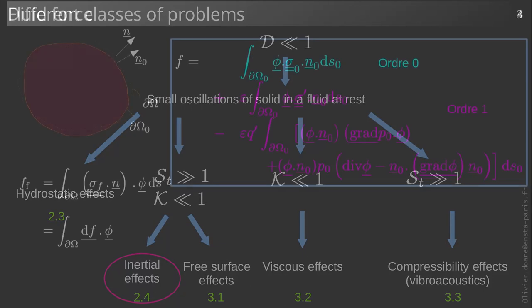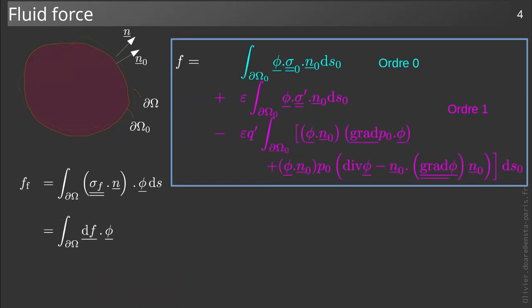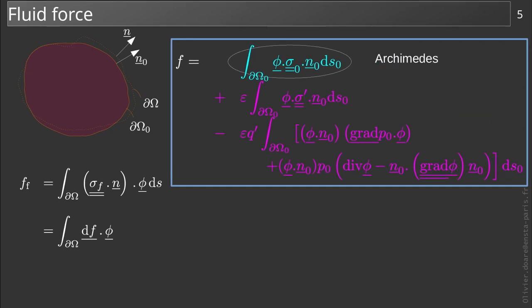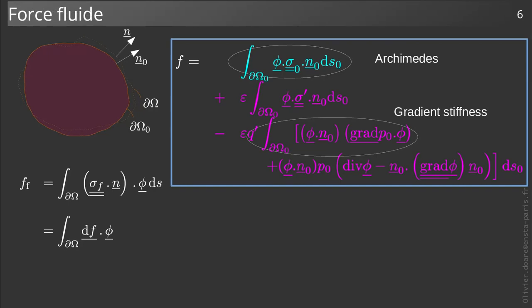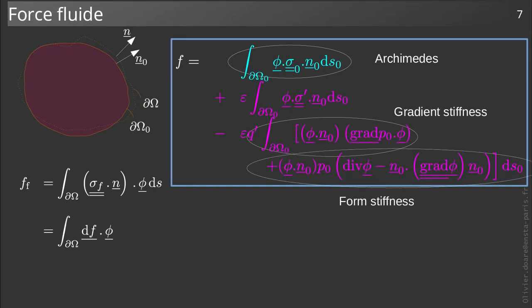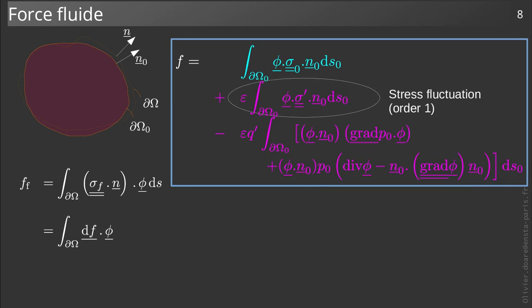In order to give us a better idea, here is the linearized fluid force obtained previously. We have already studied the term generalizing the Archimedes force, the gradient stiffness term, and the force stiffness term. It is on this term of fluctuation of the stress that we will now work.